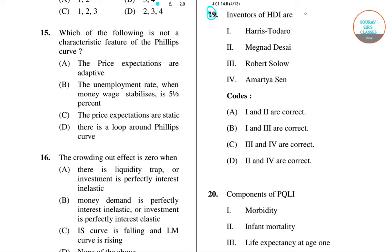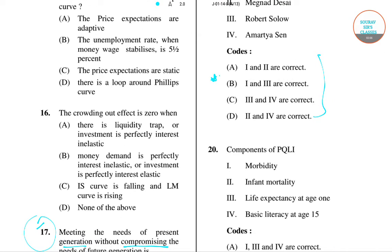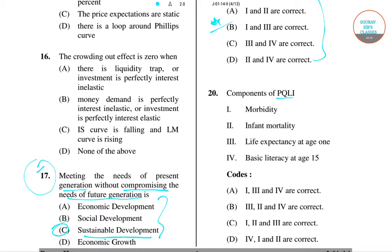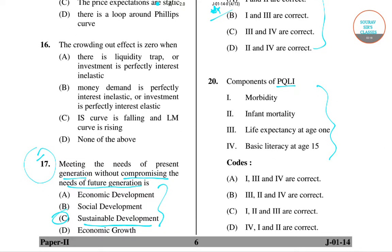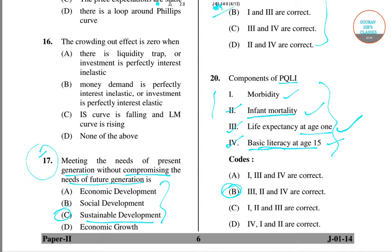I'll skip question number 19 because there is no correct answer. Moving straight to question number 20: the components of PQLI. The right answer is option B — infant mortality, life expectancy at age one, and basic literacy at age 15.